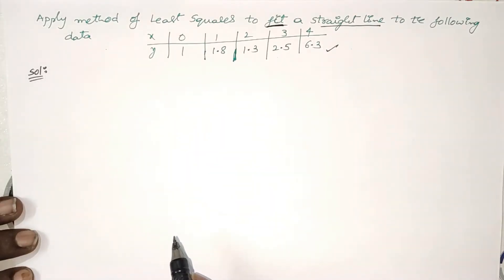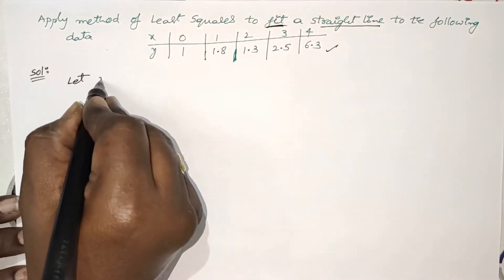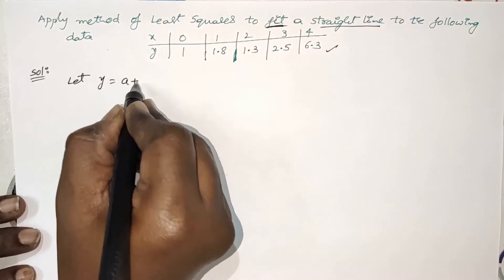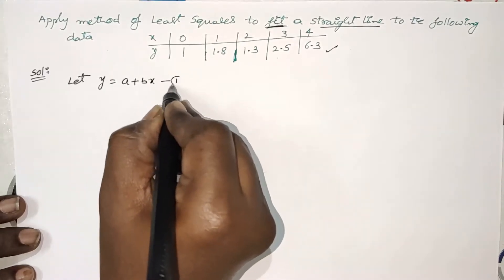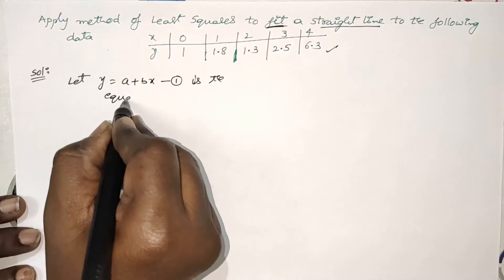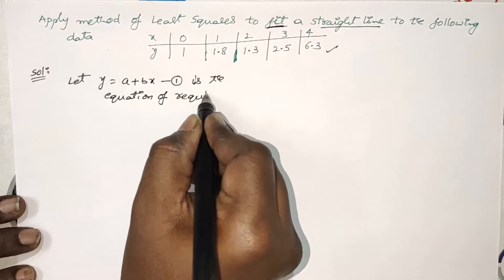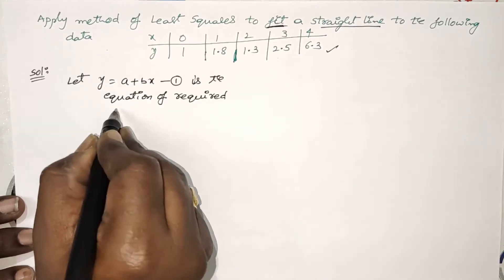First of all, we have to take the standard form of a straight line. We already know that the standard form of a straight line is y = mx + c, the slope form. But I will take y = a + bx instead of y = mx + c. Let y = a + bx — take it as equation number 1 — is the equation of the required straight line.